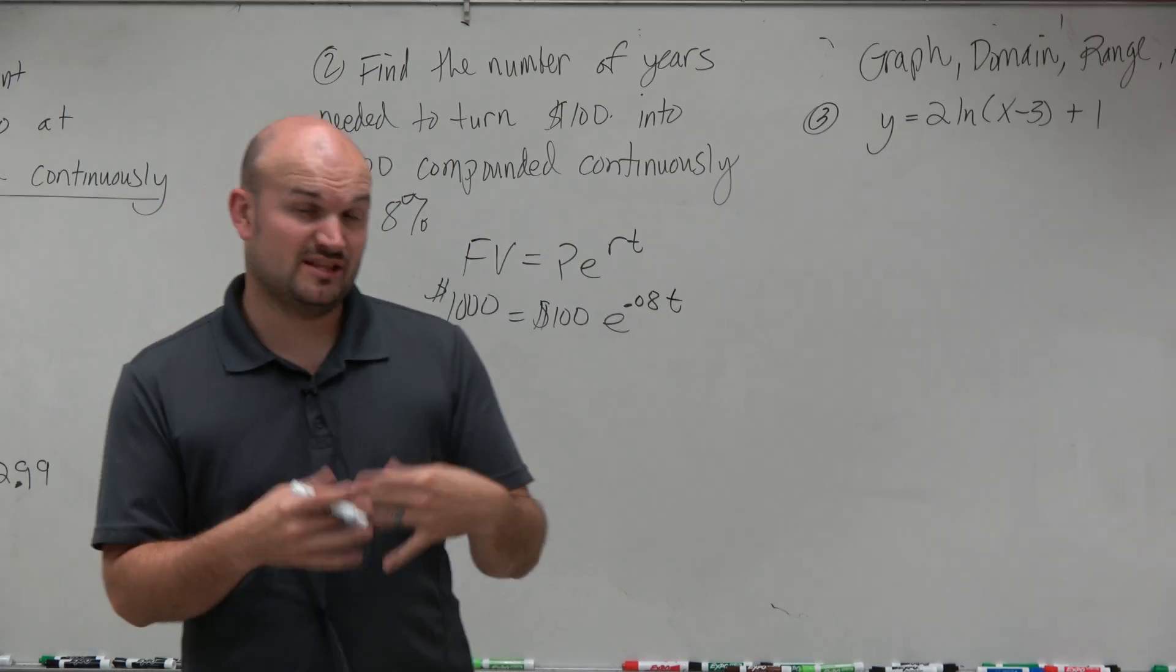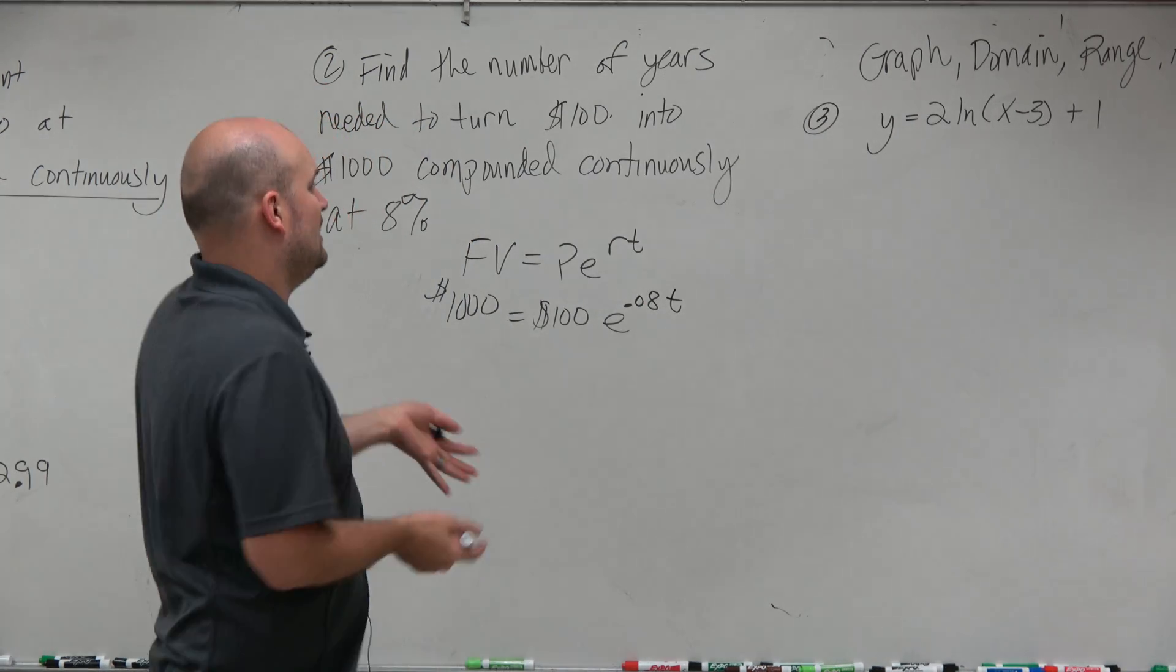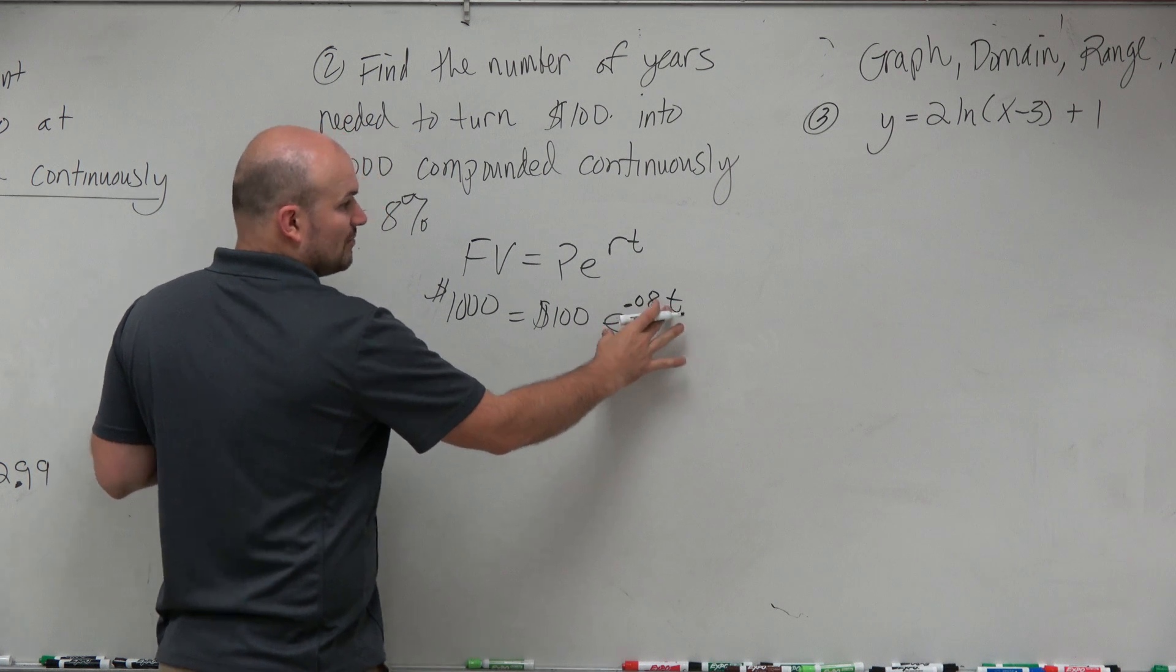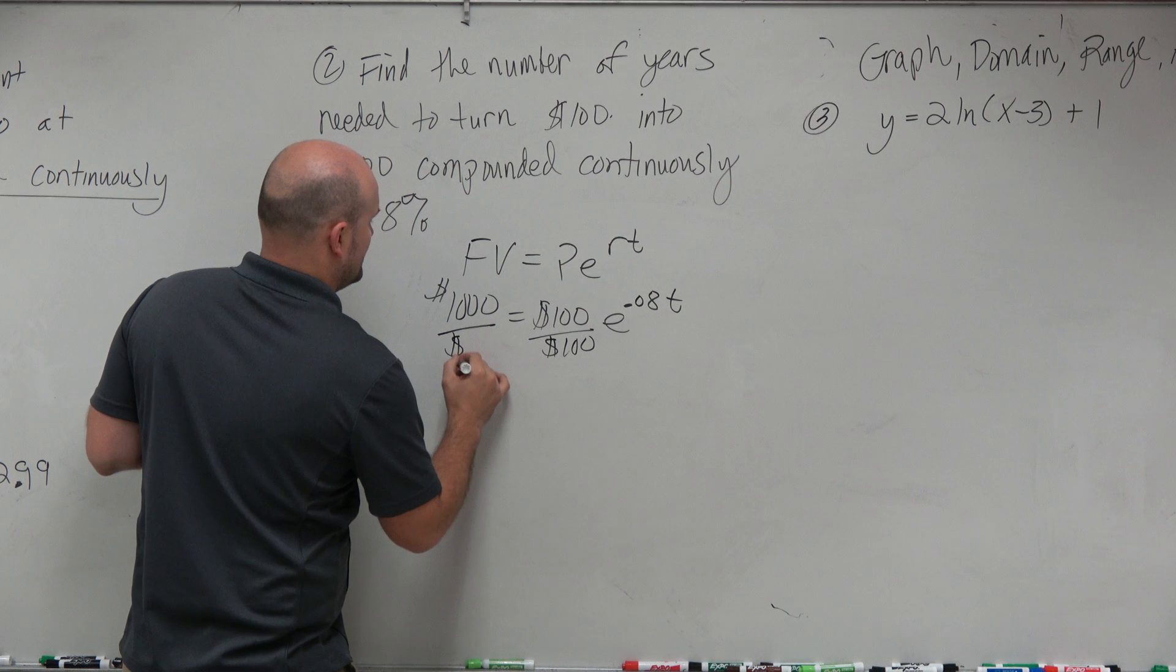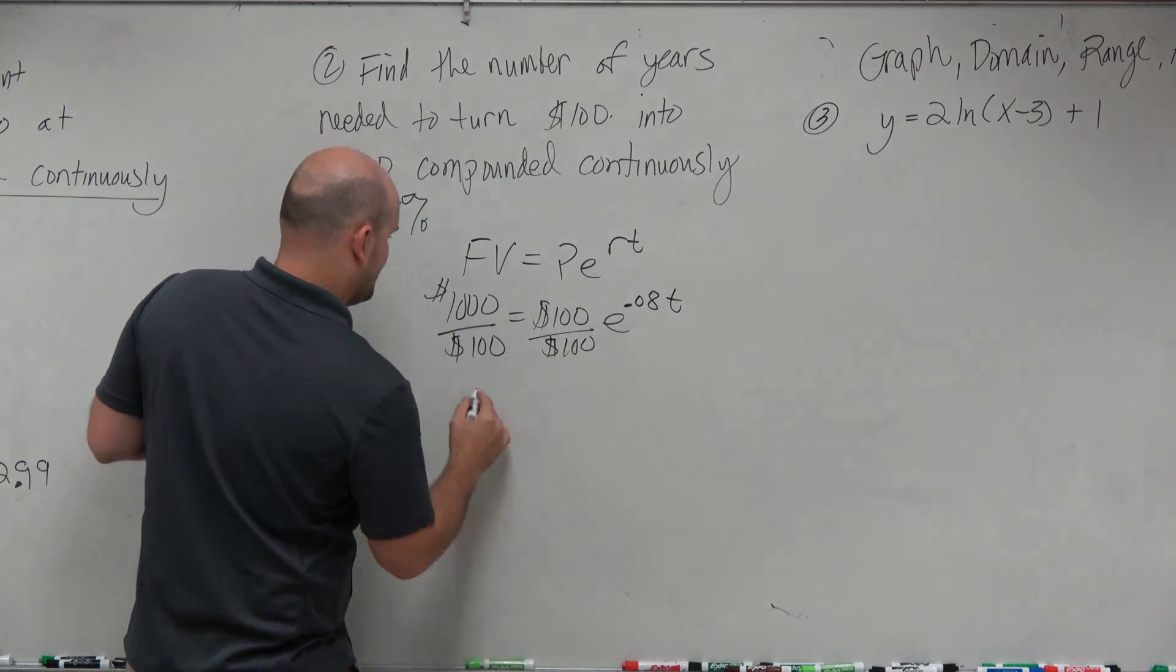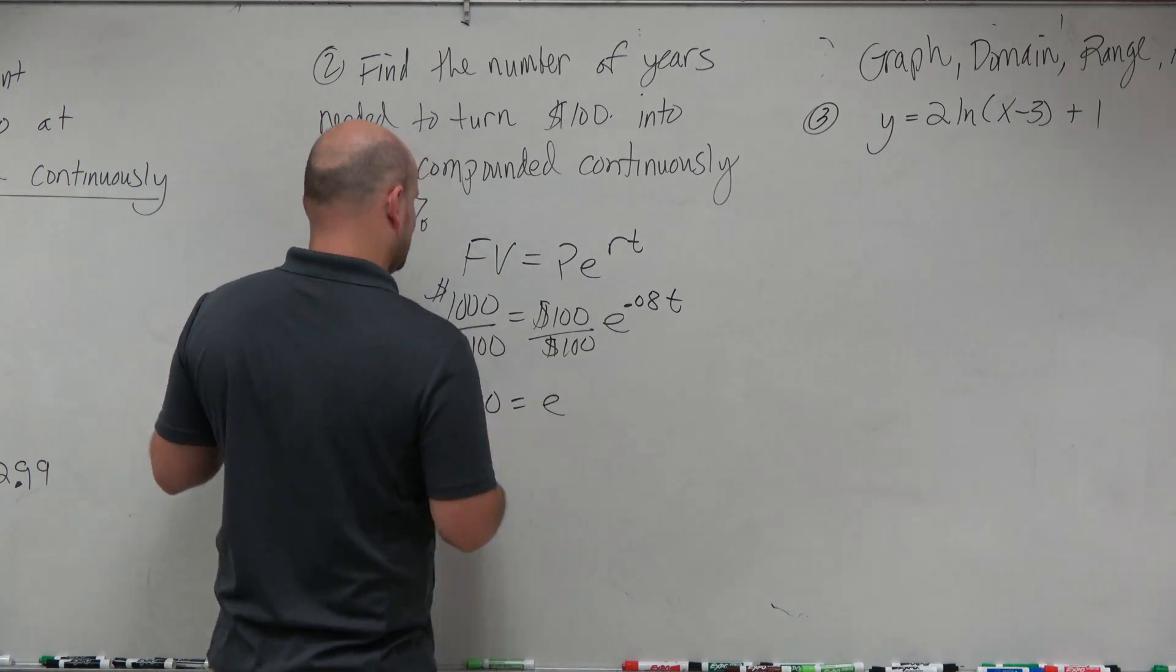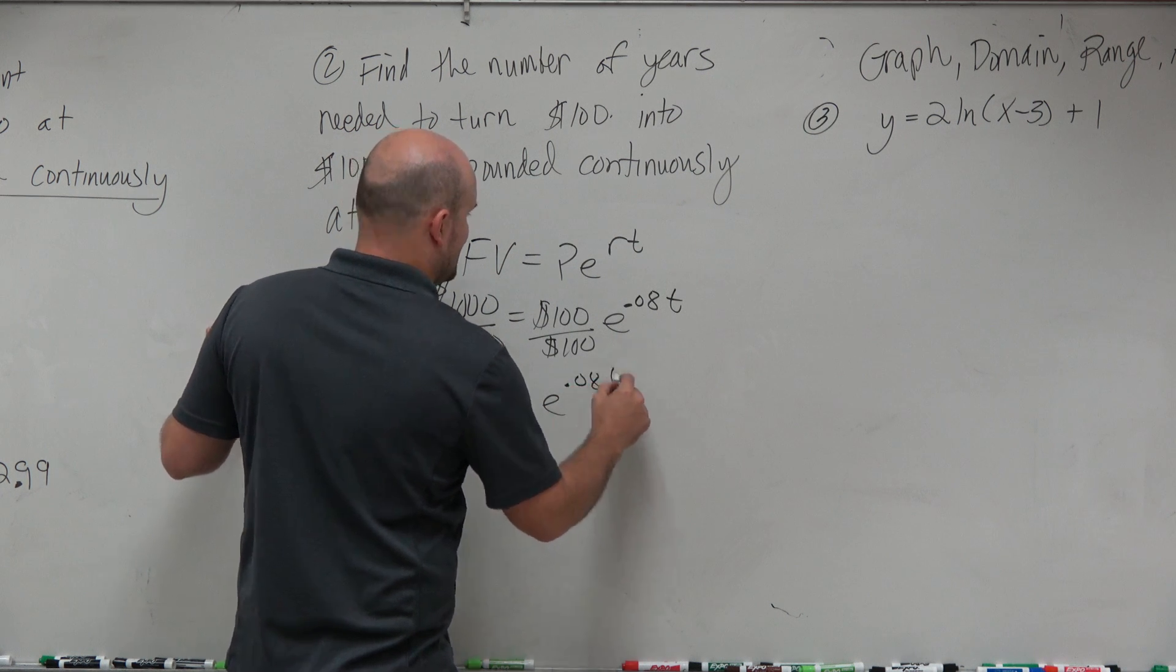So when we're trying to solve for T, the first thing we're going to do is isolate any term with our T. So we can divide by 100 here. Divide by 100. So therefore, it's going to be 10 equals E to the 0.08 T.